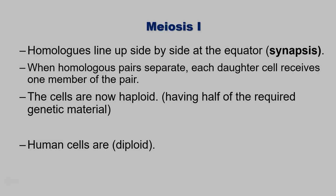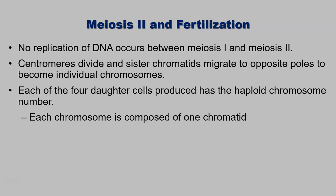An overview of meiosis: it begins with one diploid parental cell, requires two cell divisions, and ends with four haploid daughter cells. It involves pairs of chromosomes called homologs inherited from each parent. In meiosis I, the homologs line up side by side at the equator, and when homolog pairs separate, each daughter cell will receive one member of the pair. At that point the cells are now haploid. No replication of DNA will occur between meiosis I and meiosis II. The centromeres containing the sister chromatids will divide, and the sister chromatids will migrate to opposite poles to become individual chromosomes. Each of the four daughter cells produced will have the haploid chromosome number, and each chromosome will be composed of one chromatid at that point.